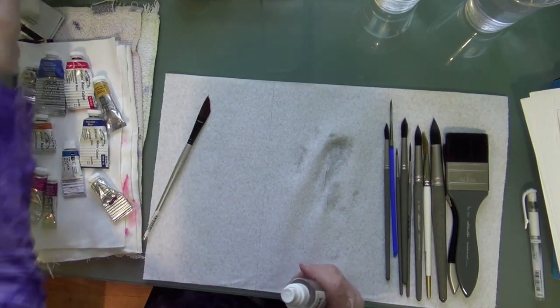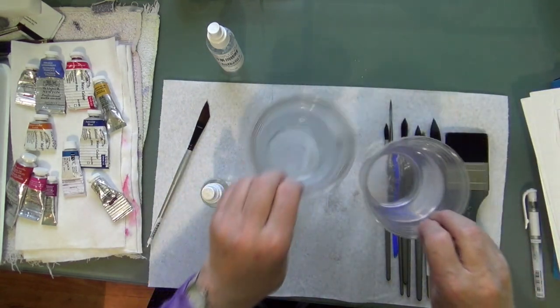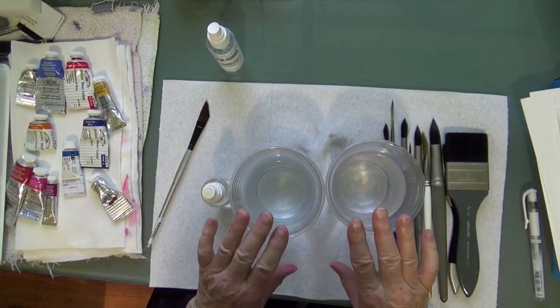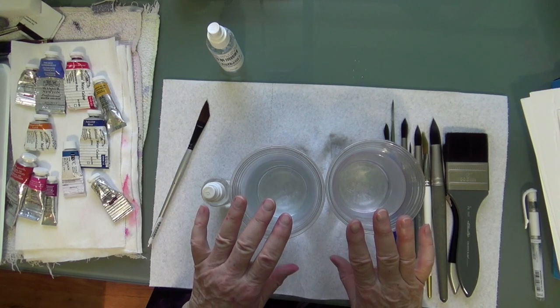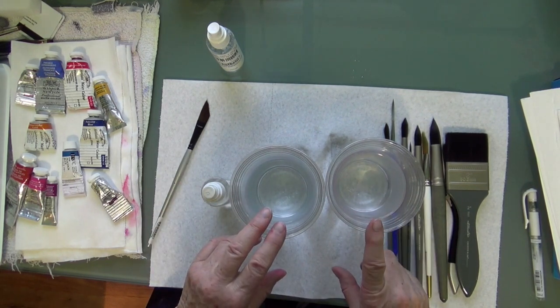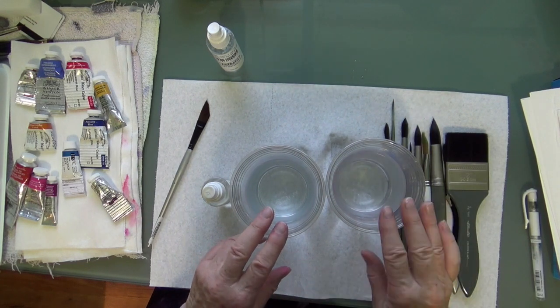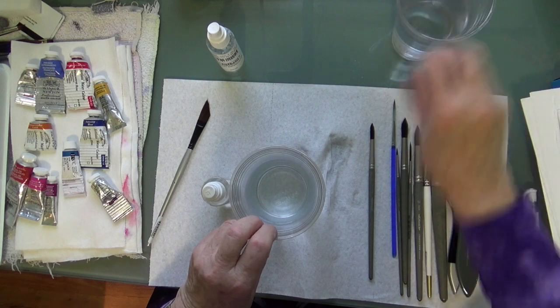And then a very important tool, of course, it's watercolor, it's water. You want to have clean water. And I always say have two containers. One that you rinse your brush out in so that water is dirty. And then one where you try to keep the water clean for when you're diluting the colors and mixing them up on your palette and stuff like that. Very important.